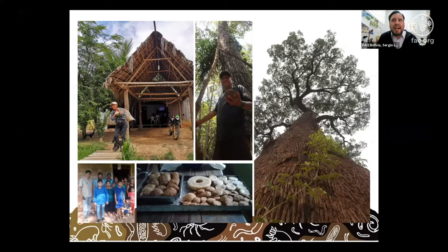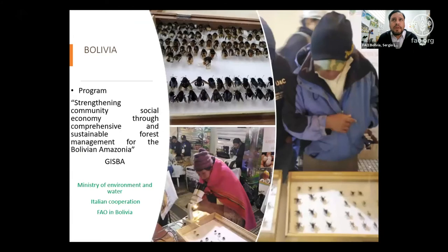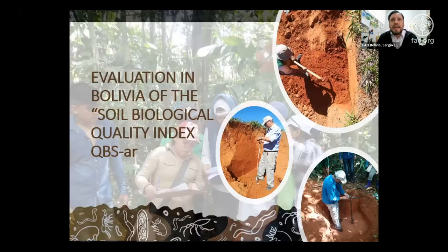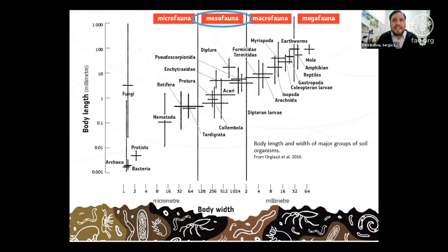The program focused on Bertholletia excelsa, the Brazil nut tree, from which Bolivia exported 825 million dollars worth over five years — 123,000 tons. Soil mesofauna comprises organisms with body sizes ranging from 0.1 mm to 2 mm wide, representing an abundant and diverse group with greater dependence on subsurface conditions compared to macrofauna and not requiring extensive instrumentation. Activity of soil biodiversity is estimated to generate 1,542 trillion dollars a year globally.